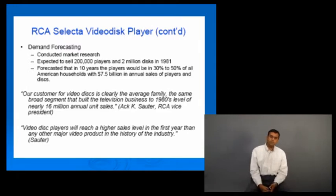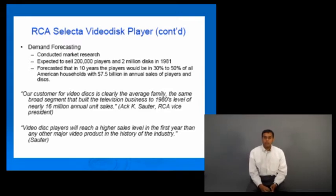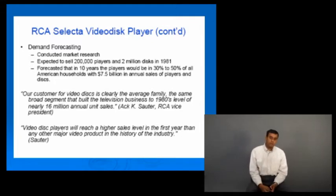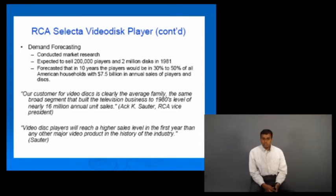Here are a few qualitative comments: 'A customer for video discs is clearly the average family' — though the pricing might make you question that. 'The broad segment that built the television business is going to go in for this,' with about 16 million annual units of sales — that was the RCA vice president, probably justifying his own position. Some industry people also said these would reach higher sales levels than anything else.